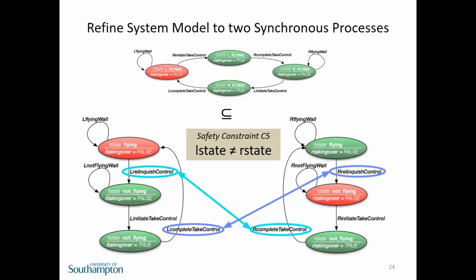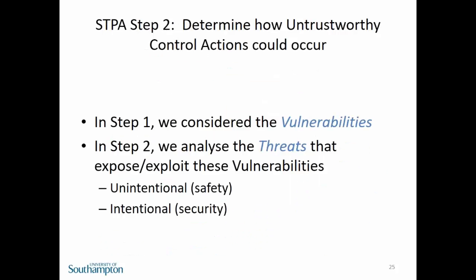We've taken the system-level state — left flying, right flying — and now have a left state and a right state with two state variables. Starting in the initial red state, when the right state initiates take control because the switch has been pressed, we move into a state where right is taking over, then synchronization between the two state machines occurs: R completes take control, L relinquishes control, and we end up with the switchover. We use structured natural language and a formal engine to verify the high-level, top-level safety constraint.